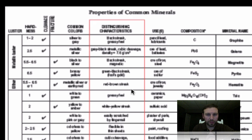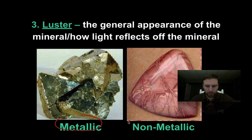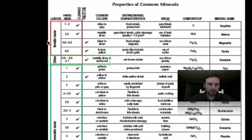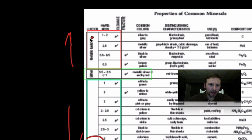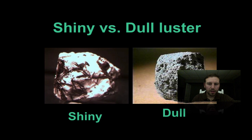Luster confuses many people. Luster is the general appearance of how the mineral looks, or how light reflects off that mineral. We have two forms of luster on the Earth Science Reference Table: metallic and non-metallic. Just because it's shiny does not mean it's metallic — metallic means it has that metal or chrome-like appearance. Our reference table is divided with metallic minerals on top and non-metallic below, with a dividing line between them. We can also have a distinction between shiny and dull within non-metallic luster.